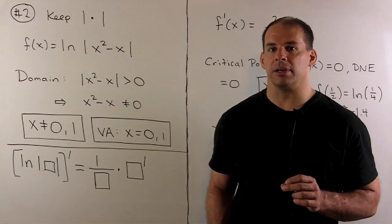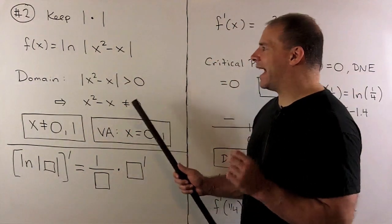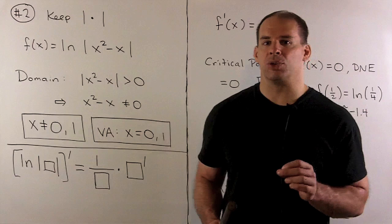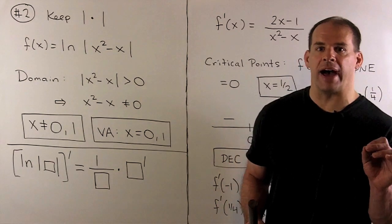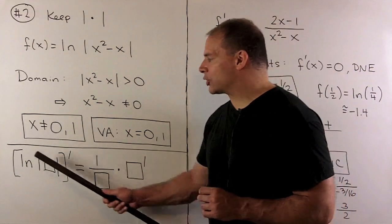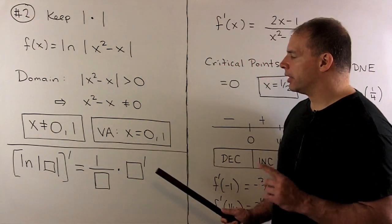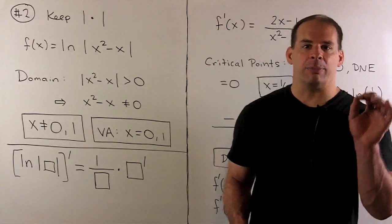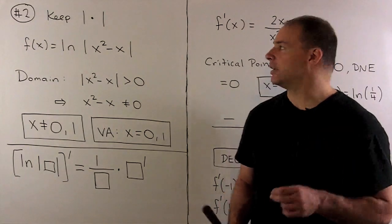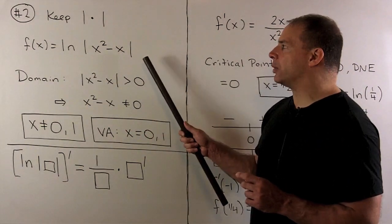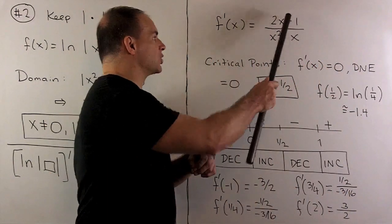Let's look at increasing and decreasing — for that, we need the first derivative. Usually when I have a composition with an absolute value inside, I go to a piecewise function, but here we have a special rule: the derivative of ln|box| is just 1/box times box'. This looks just like the derivative of ln(box); the only difference is in the domain of the final derivative. Applying this, we simply forget the absolute value, flip the inside, and multiply by its derivative: f'(x) = (2x - 1)/(x² - x).